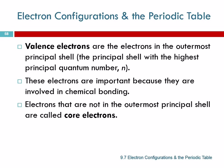Electron configurations in the periodic table. Valence electrons. We divide electrons into two different groups: valence electrons and core electrons.